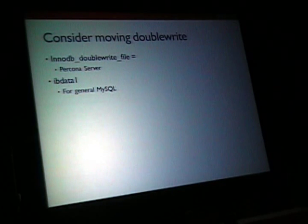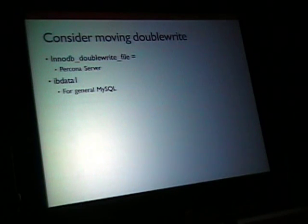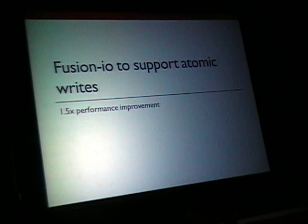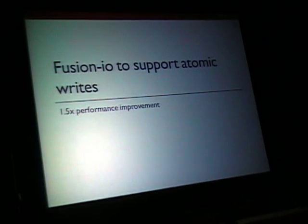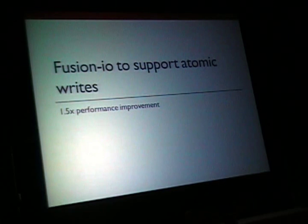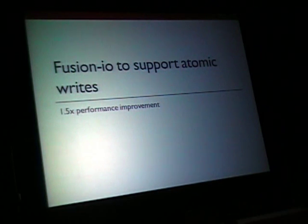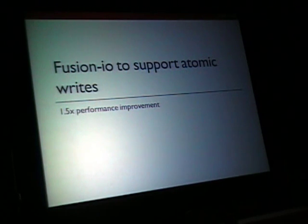It may be better, especially for MLC cards, to put the double write area to some location off the SSD. Percona Server has a special option to locate the double write area outside Flash. On the development front, FusionIO claims to support atomic writes — atomic 16K writes — which would mean we no longer need a double write area. Disabling double write could provide around a 50% performance increase. We are waiting for FusionIO atomic writes to become available.